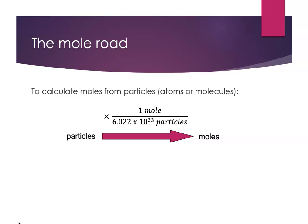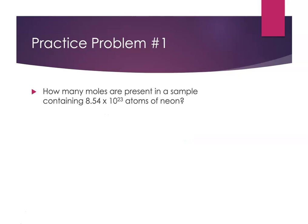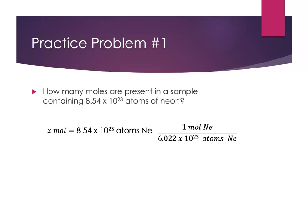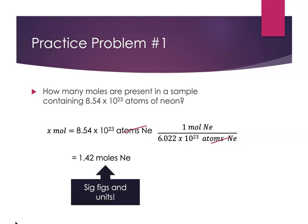Practice problem number one: how many moles are present in a sample containing 8.54 times 10 to the 23rd atoms of neon? I'm given atoms of neon and want to find moles. That number is bigger than Avogadro's number, so I expect more than one mole. Setting it up: x moles of neon equals 8.54×10²³ atoms of neon, multiplied by 1 over Avogadro's number. The unit atoms of neon cancels, leaving moles of neon. I get 1.42 moles of neon — three sig figs, appropriate units.